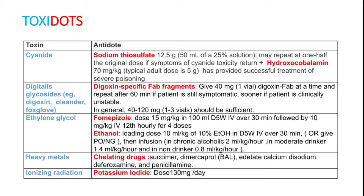For heavy metals, you have to use chelating agents. Drugs available are succimer, dimercaprol, calcium disodium edetate, deferoxamine, and penicillamine. For ionizing radiation, which is not very common in our country, potassium iodide is the treatment of choice — dose is 130 mg per day.